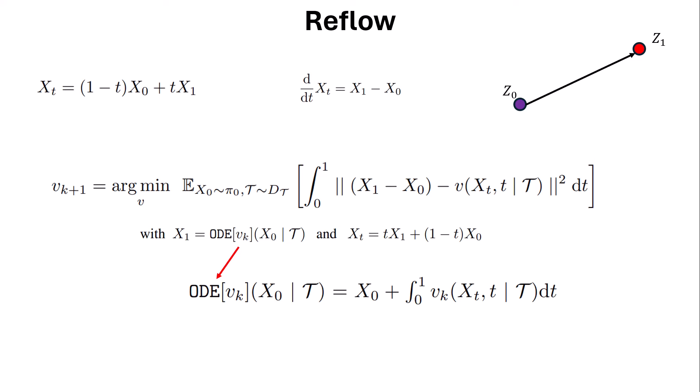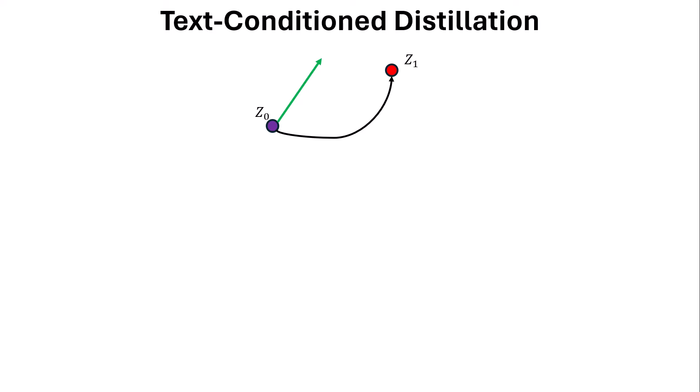InstaFlow also proposes another thing called text-conditioned distillation. In text-conditioned distillation, we want to do it in a single step. We initialize a model randomly — that single step moves from z0 to some arbitrary location — and we optimize it to move towards z1, guided by the curvature we already have from Stable Diffusion. So Stable Diffusion with 25 steps acts as a teacher network that helps us reach z1 in a single step.